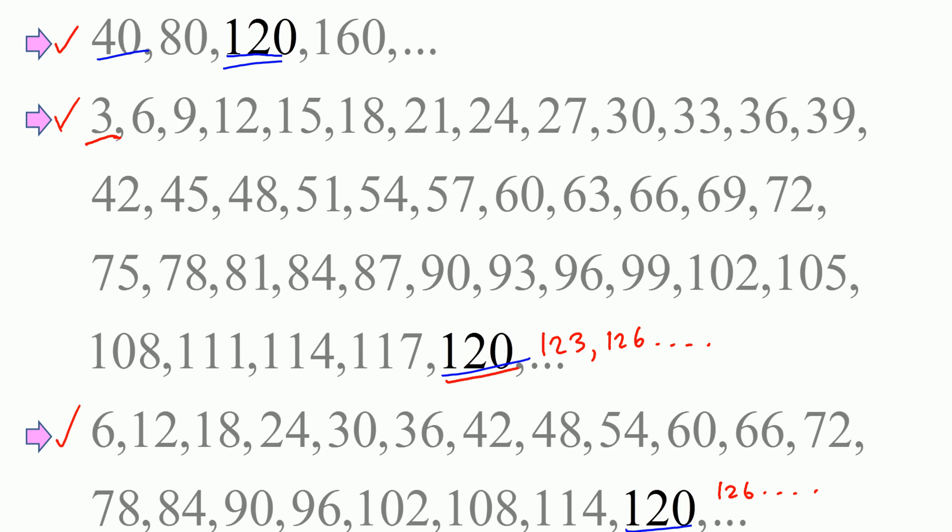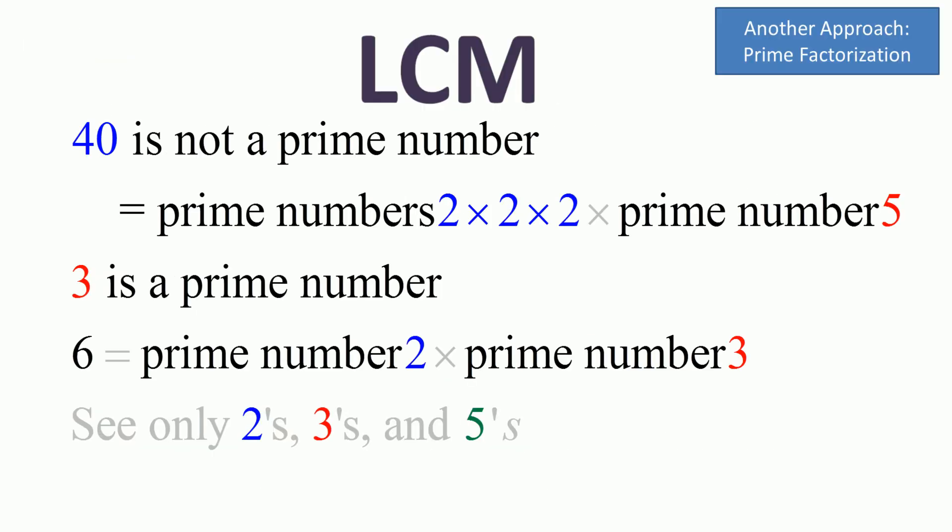How do we do the prime factorization? 40 is 2 times 20. Break 20: 20 is 2 times 10. Now break 10: 10 is 2 times 5. So the number 40 is as good as 2 times 2 times 2 times 5.